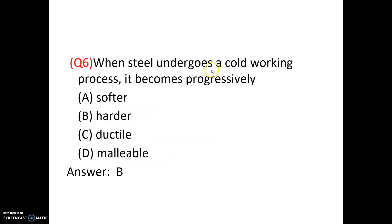Question number 6. When steel undergoes a cold working process, it becomes progressively harder. Options are softer, harder, ductile, malleable — the answer is harder. After the cold working process, work hardening occurs, making the material harder. It will lose its ductility after cold working.